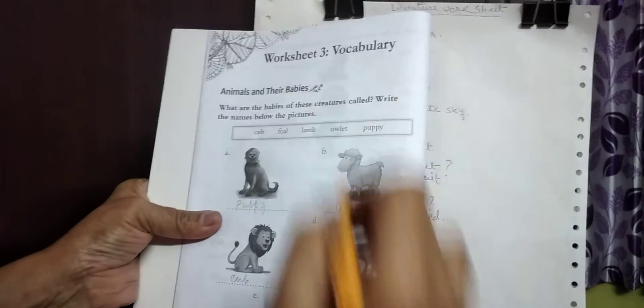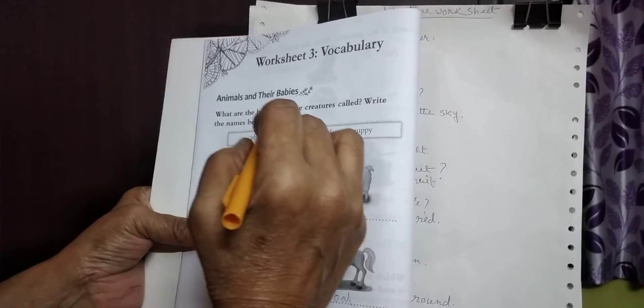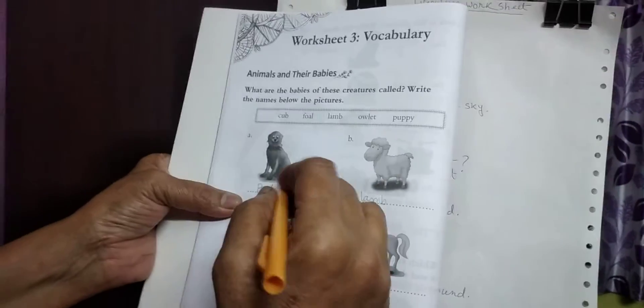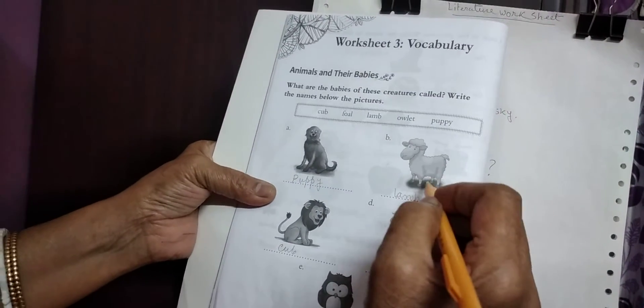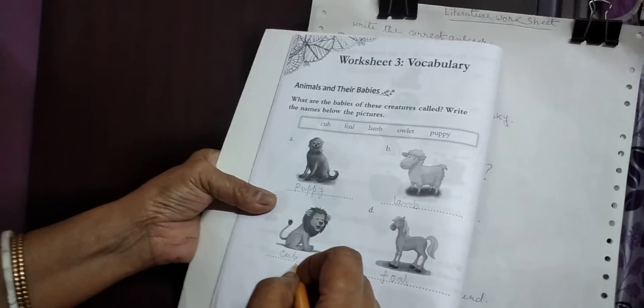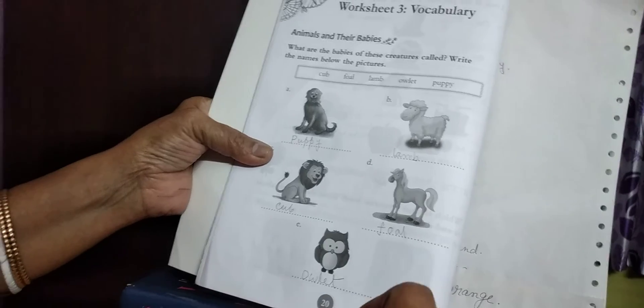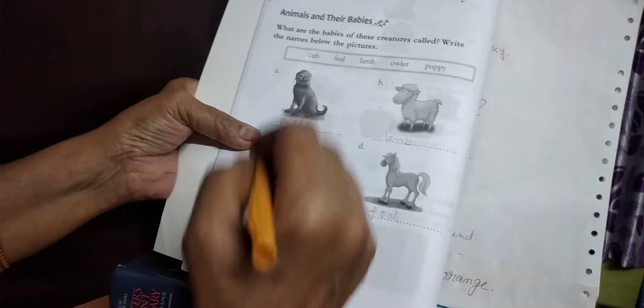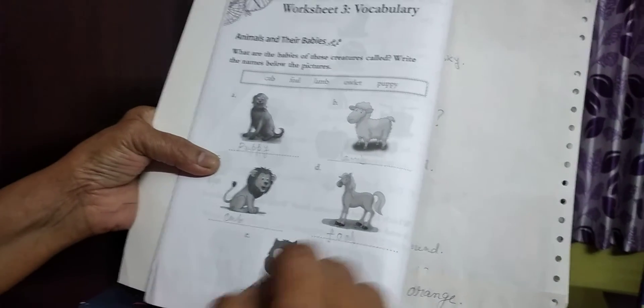Next, look here. Questions could be: Write what are the babies of these creatures called? They could ask: Write the baby of dog. What will you write? Puppy. Write the baby of sheep: lamb. Write the baby of lion: cub. Write the baby of horse: foal. Write the baby of owl: owlet. Such questions could be asked: baby dog - puppy, baby sheep - lamb, baby lion - cub, baby horse - foal, baby owl - owlet.